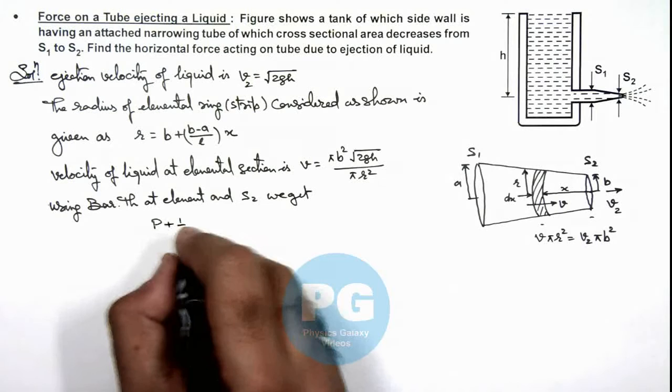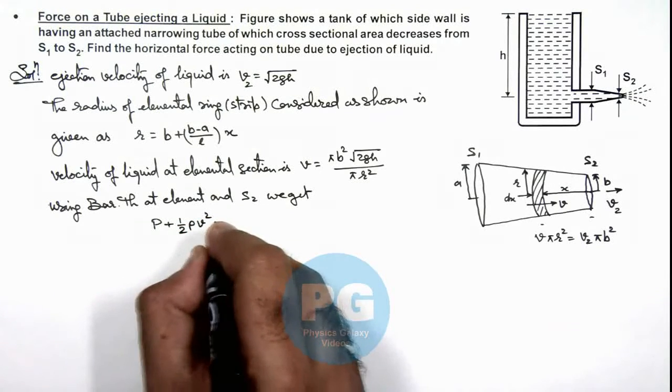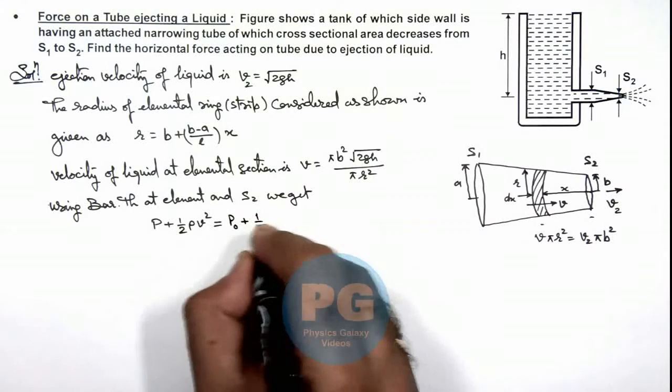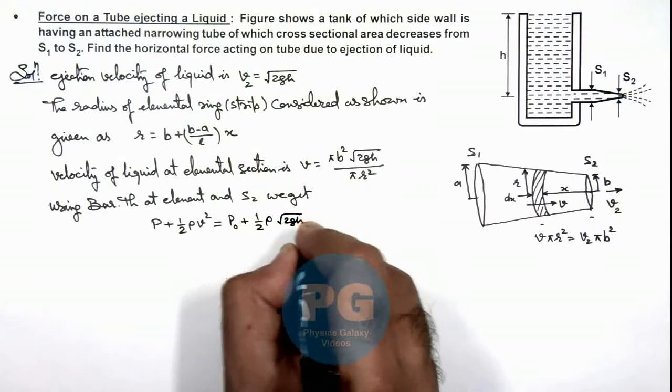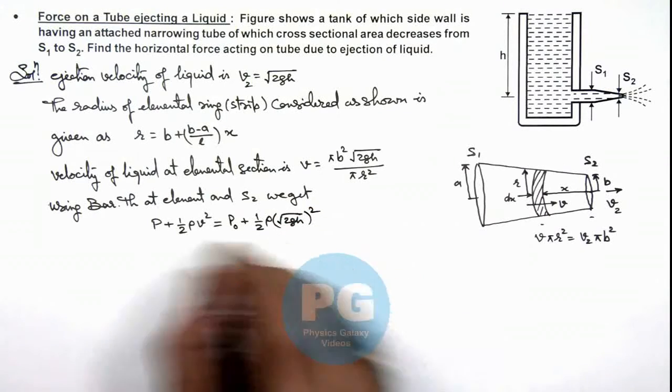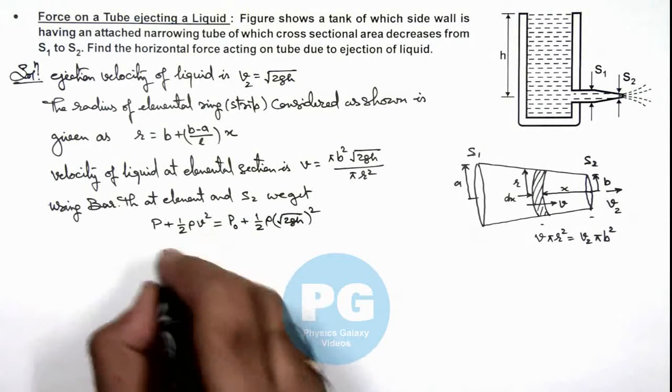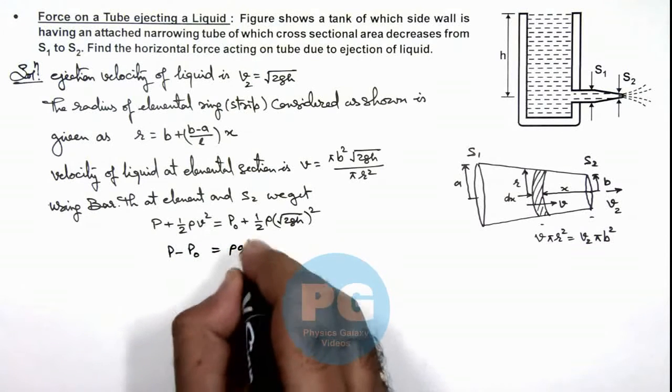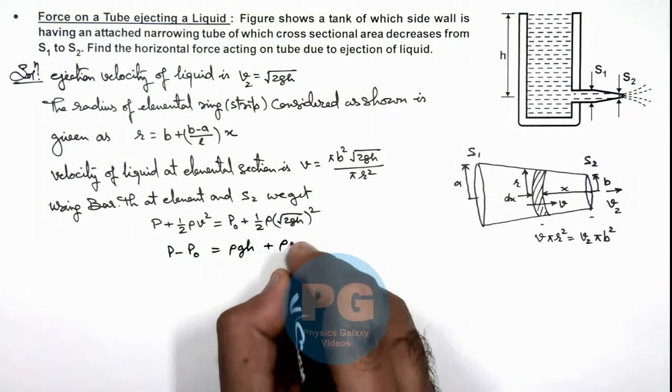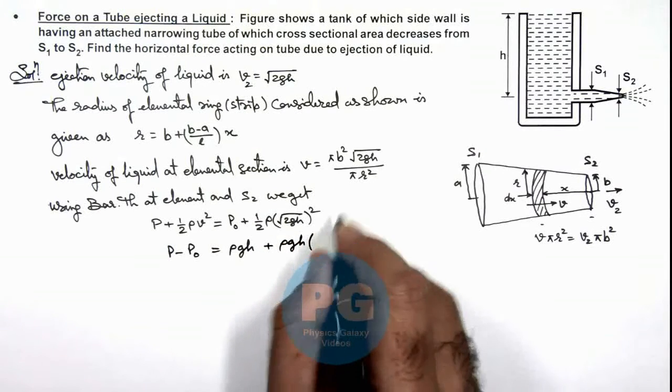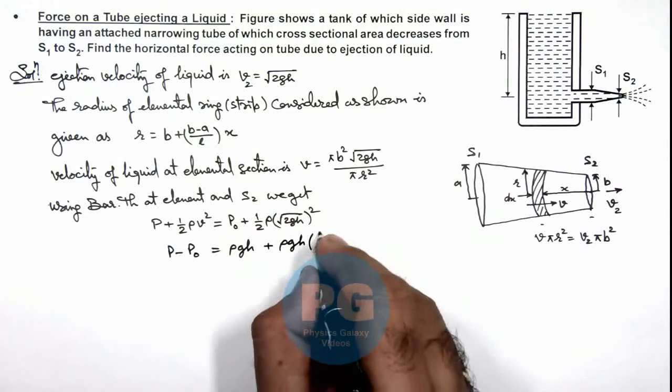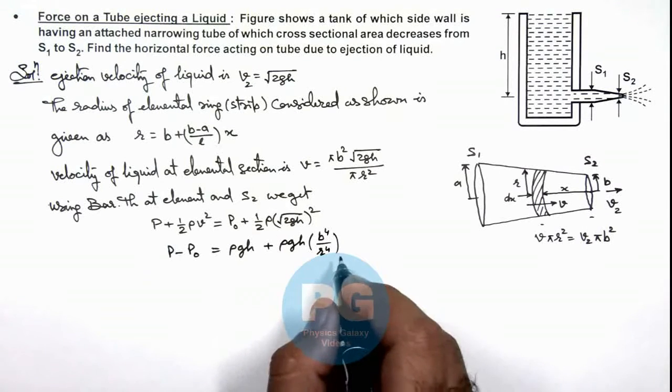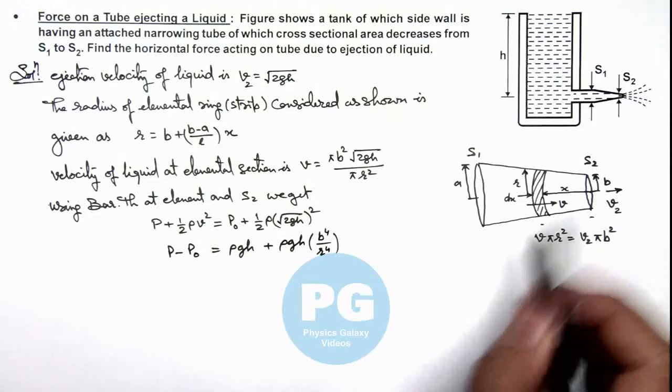So from this relation we'll get the value of pressure difference p - p₀, which is equal to ρgh plus ρgh. When we substitute the value of v over here, this gives us b⁴/r⁴. So this is the pressure difference between this element pressure and the atmospheric pressure.